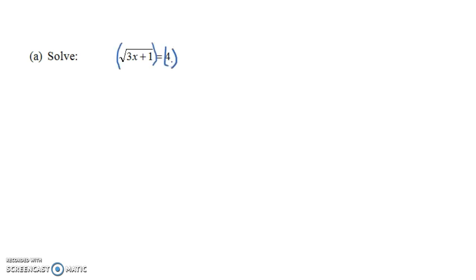What we're going to do is square both sides of the equation. We'll square the square root to get rid of the square root, so we just get 3X plus 1 is equal to 16. Four squared is 16. Now subtract 1 from both sides. We get 3X is equal to 15, and so X is equal to 5.